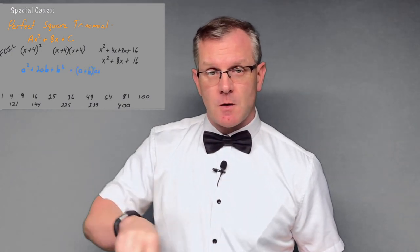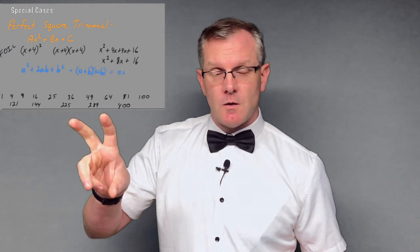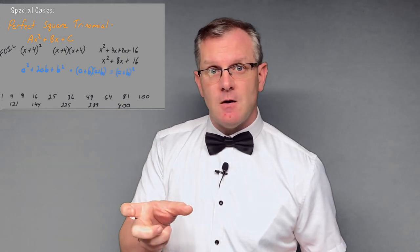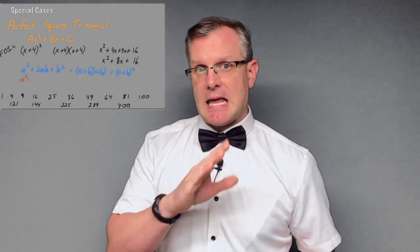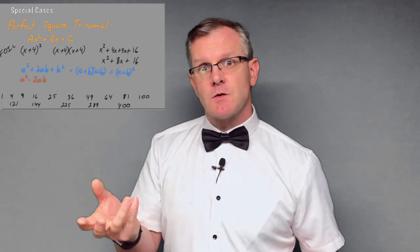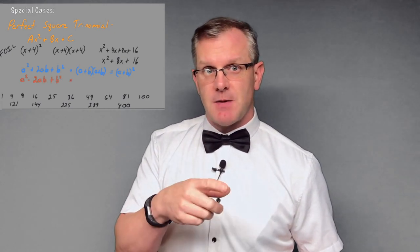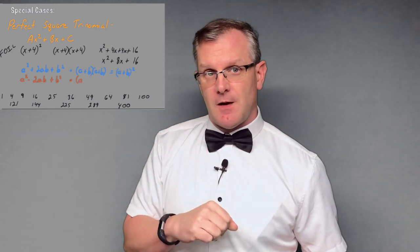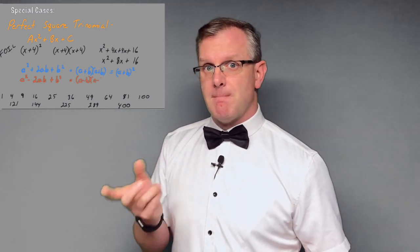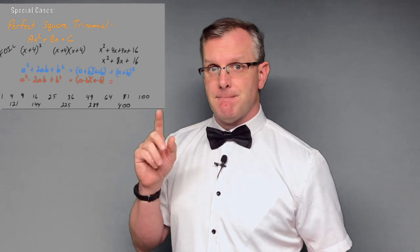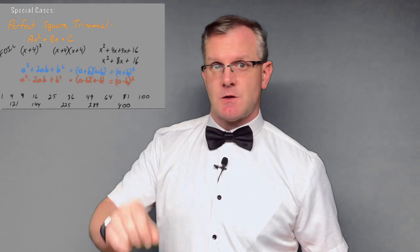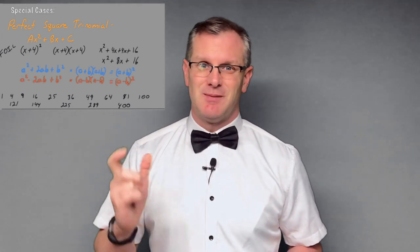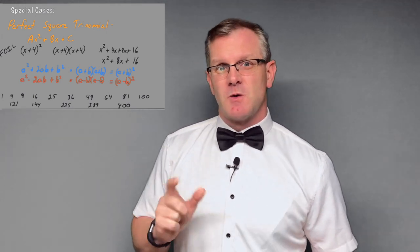We went ahead and did FOIL, multiplied that out. We ended up with x squared plus 4x plus 4x plus 16. Combine the like terms. Notice that 4x and 4x. That center term becomes double of my two factors. So the most general version of this perfect square trinomial, A squared plus 2AB plus B squared. We can also do this with subtraction. A minus B squared becomes A squared minus 2AB plus B squared. In a perfect square trinomial, your C term is always, always positive.